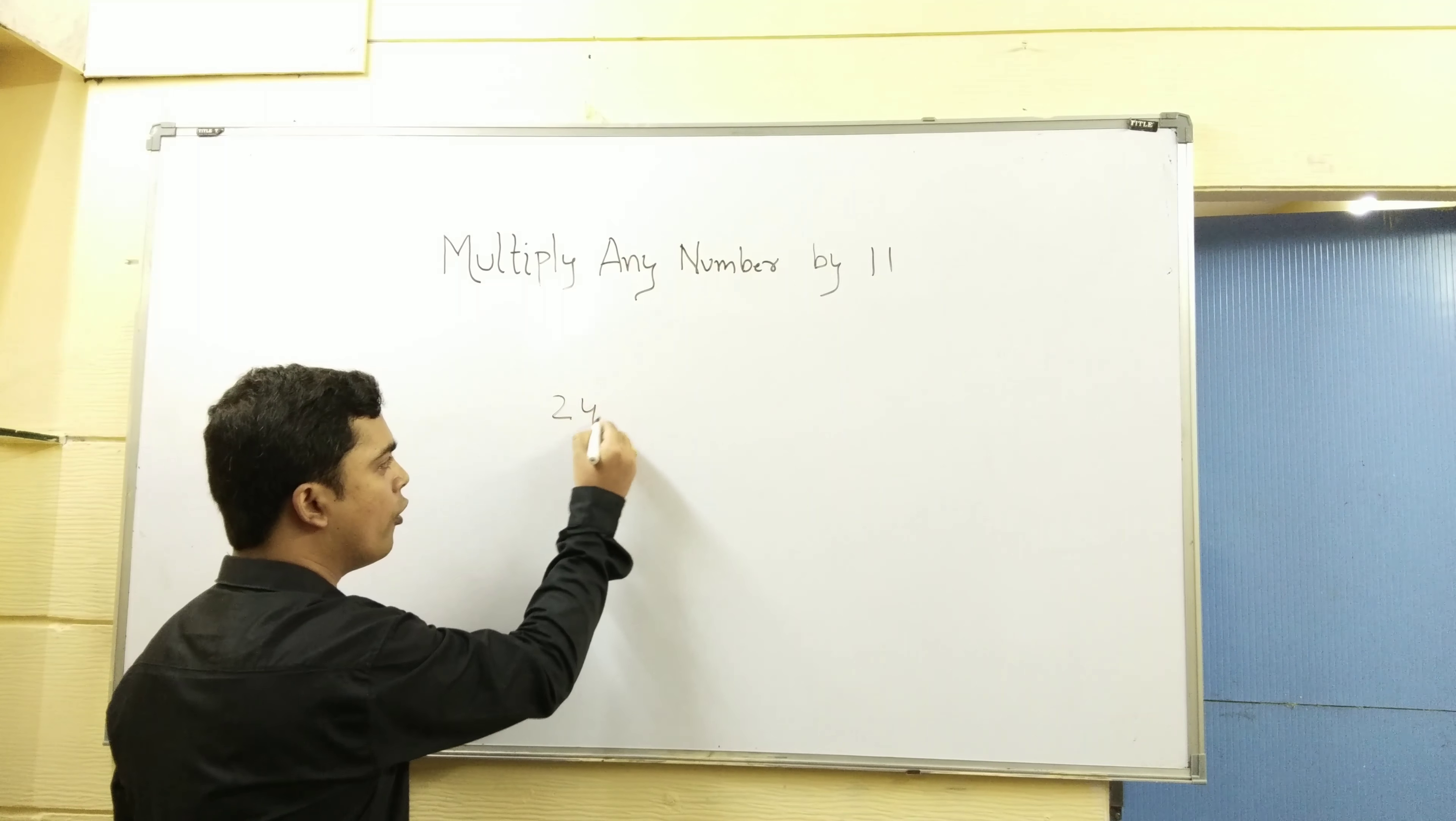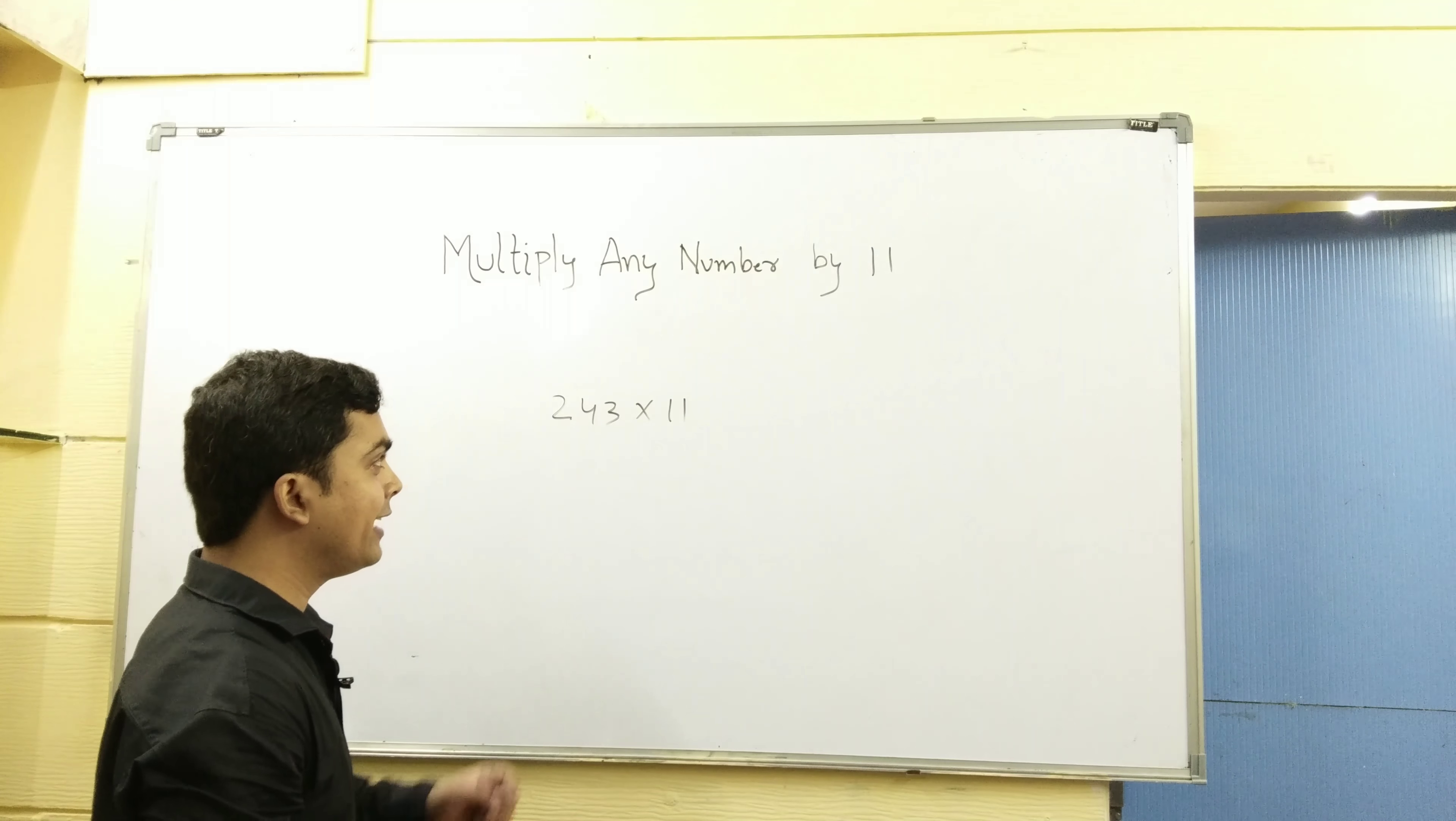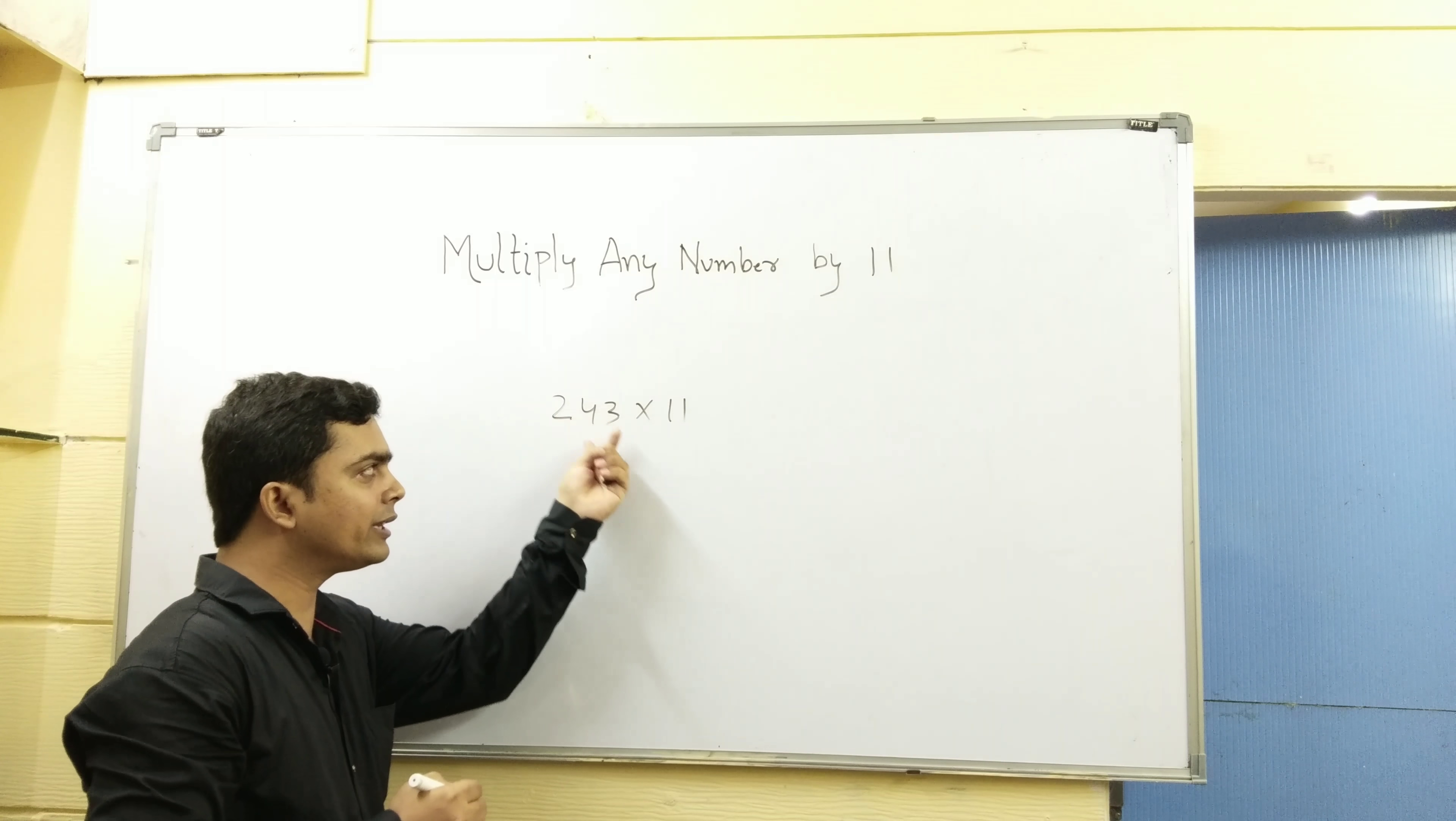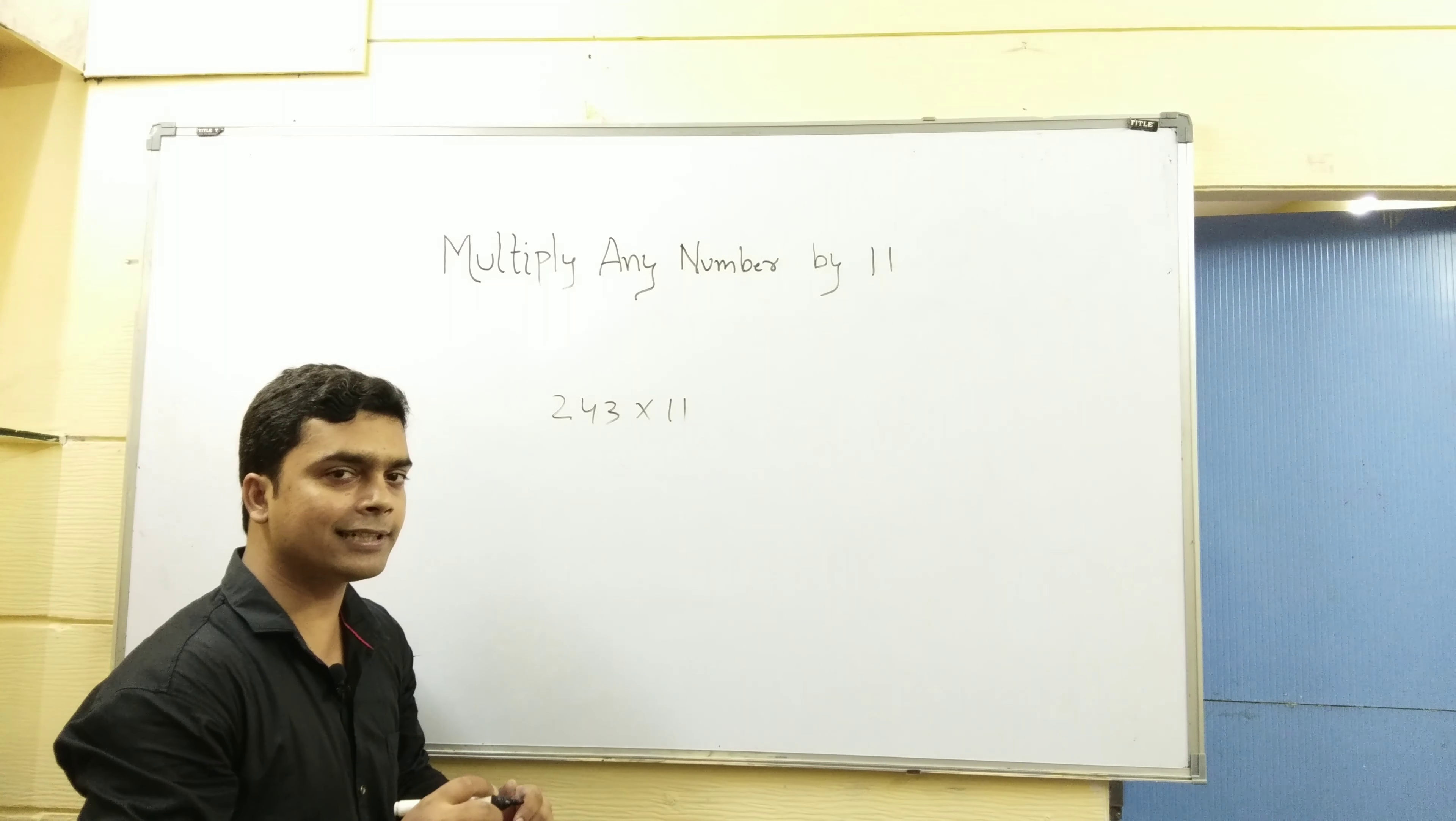243 multiply 11. You can see 243 multiply by 11. You can see how easy way you can do it.